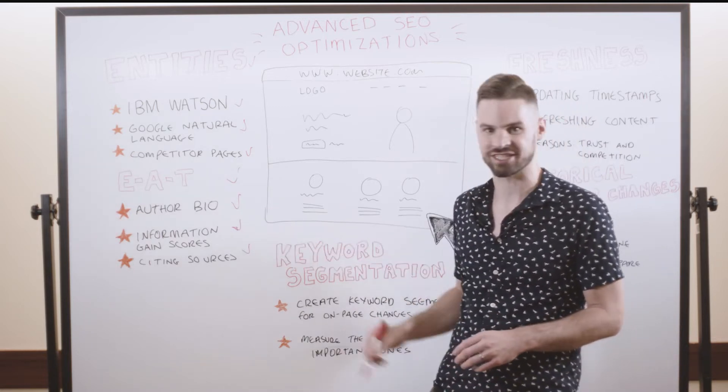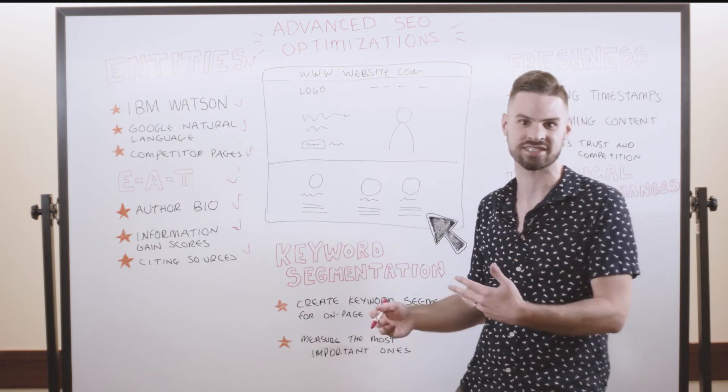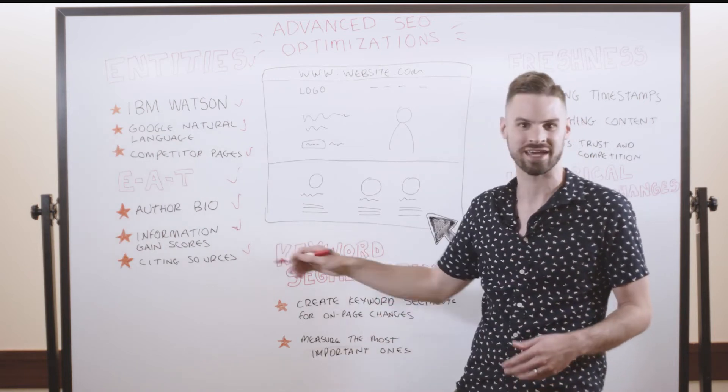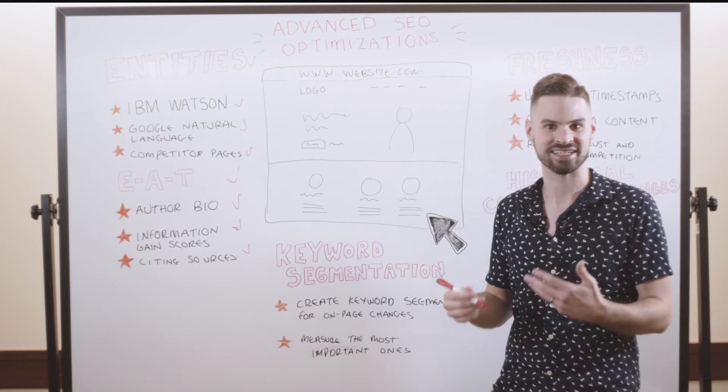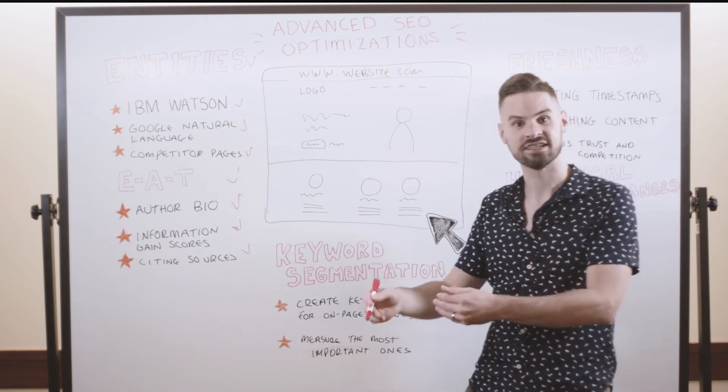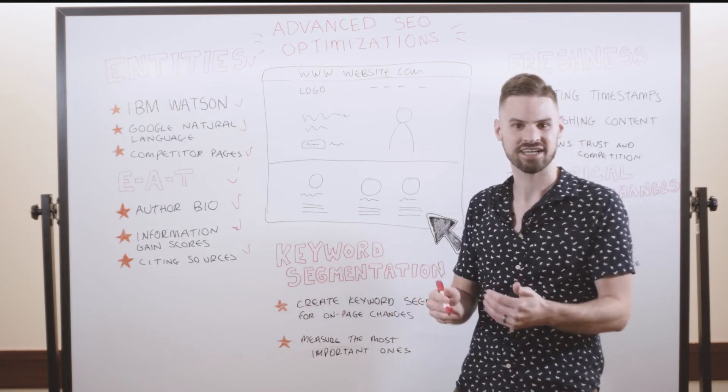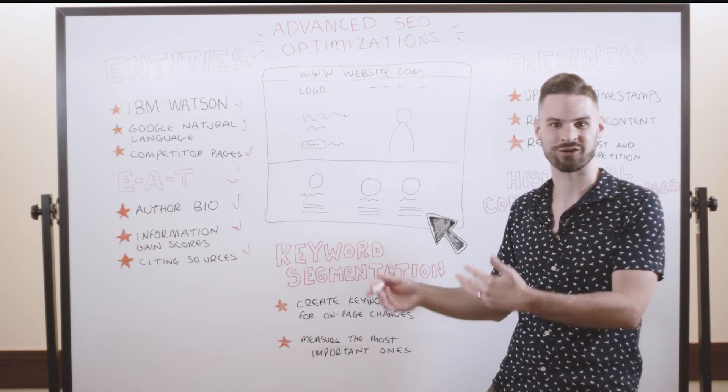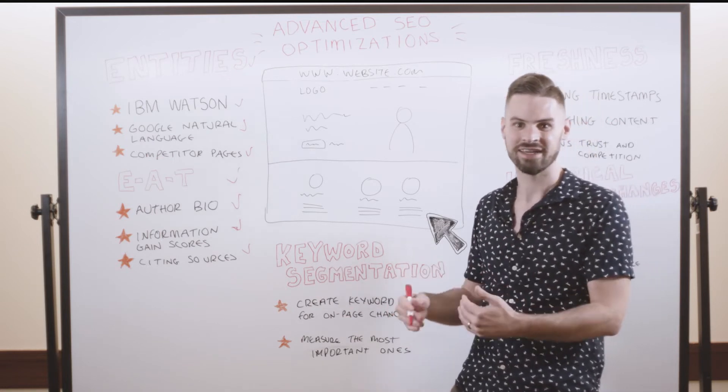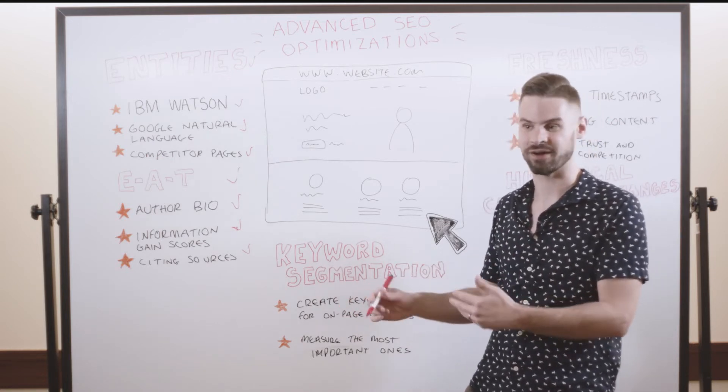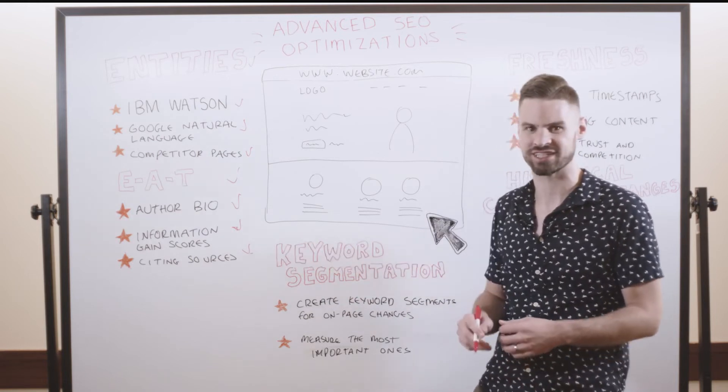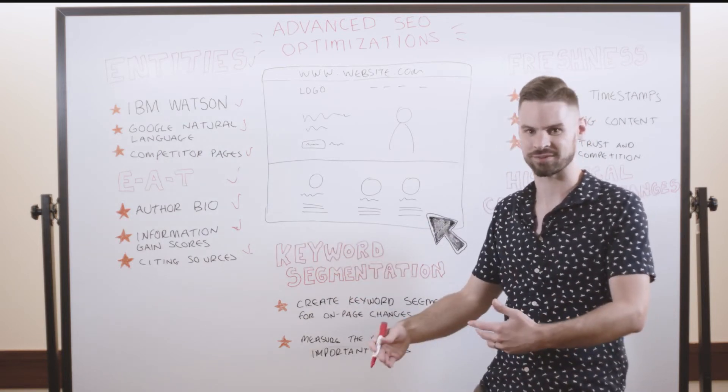Another great way to improve the EAT of your site's content is to actually cite sources. The Wirecutter is phenomenal at doing this. Anytime they cite an individual fact, they actually cite where they got that fact and link to external, trusted, accredited sources to verify where they're finding that information from. Another great way to improve the trustworthiness of your content, take your on-page optimizations to the next level.